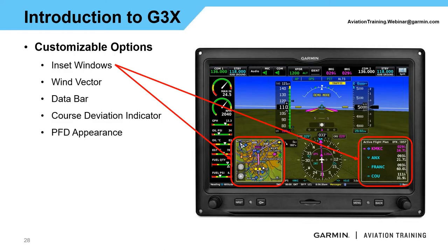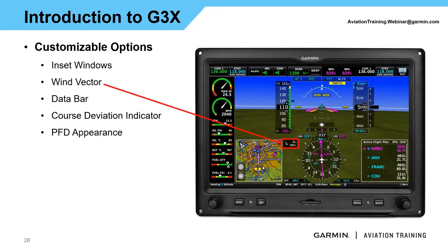Going back to the customizable options, those inset windows we mentioned are also, as we get into split screen, shortcuts to those dedicated pages. If I need to get to a map page, all I need to do is press on the map. Same thing for the flight plan — press anywhere in the flight plan inset and that page will be brought up. The wind vector has several different formats: some show crosswind and headwind components; this one shows the arrow, the numerical value, and the actual wind velocity.